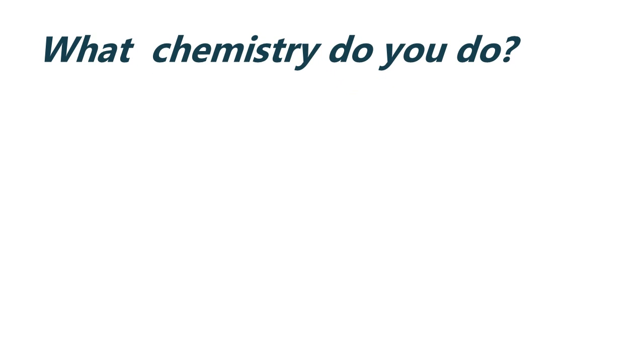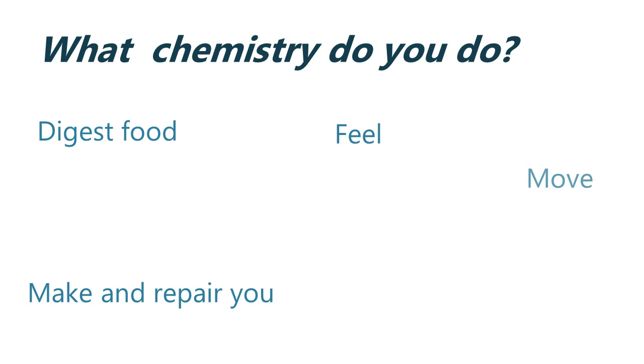So what do you do on a chemical level? The short answer is everything. Everything you do in some way involves chemical reactions occurring somewhere in your body.